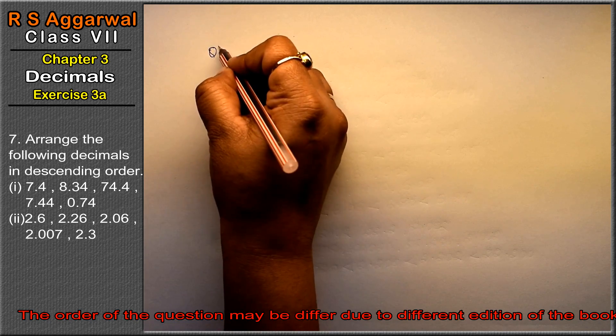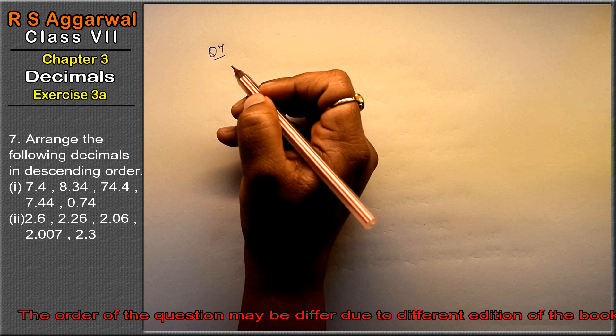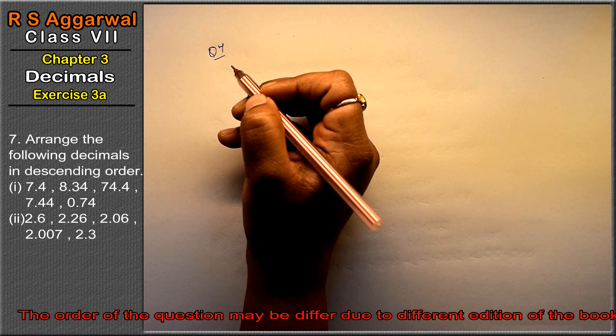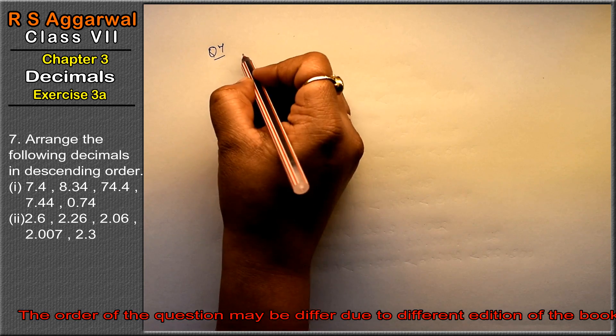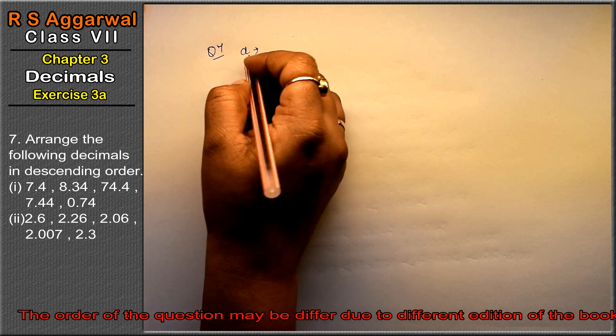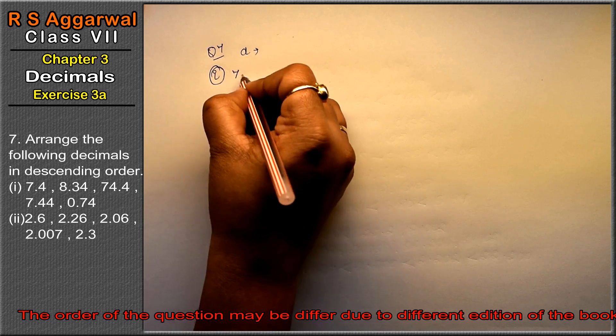Let's do question number 7 of exercise 3A on decimals. Question number 7 is arrange the following decimals in descending order. Descending means from largest to smallest. First part: 7.4, 8.34, 74.4, 7.44, 0.74.